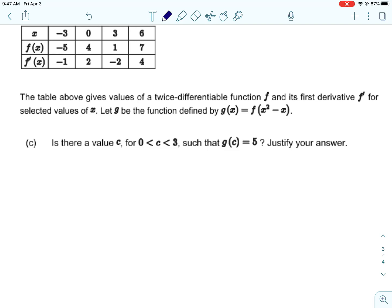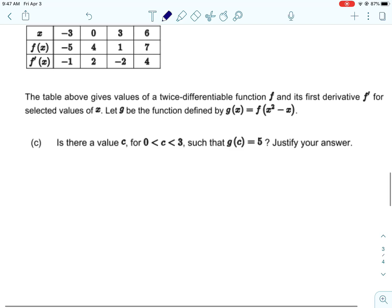For c, this is, is there a value c for c between zero and three, such that g of c equals five? So when you see that, when you see those words, I want you automatically to think intermediate value theorem every time. And when we do intermediate value theorem, we have to basically do three things. First, we have to make sure and justify, verify that g is continuous.